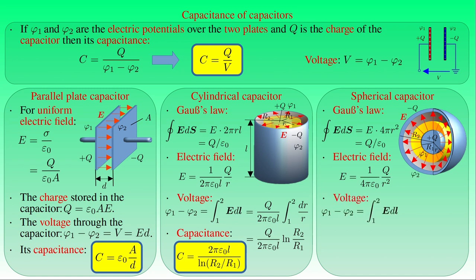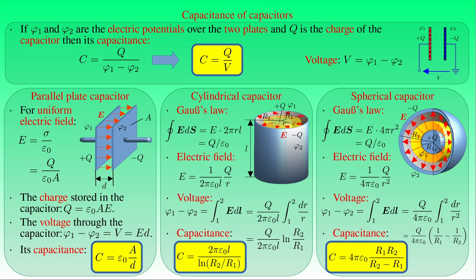The voltage through the capacitor — that is, the difference between the potentials Φ₁ and Φ₂ over the conducting spheres — equals the line integral of the electric field E along a path connecting the two spheres. Substituting the expression for the radial electric field into the integral, we can write the voltage as Q over 4πε₀ times the integral of 1/R² from R₁ to R₂ with respect to R. The definite integral equals −1/R evaluated at the upper and lower limits, giving (R₂ − R₁) over (R₁ times R₂). The capacitance C of a spherical capacitor is therefore equal to 4πε₀ times R₁ times R₂ divided by (R₂ − R₁). If the radius R₂ of the outer sphere tends to infinity, the formula reduces to the capacitance of an isolated spherical conductor, 4πε₀R₁, regaining our earlier result.